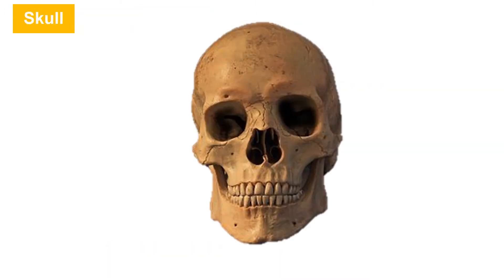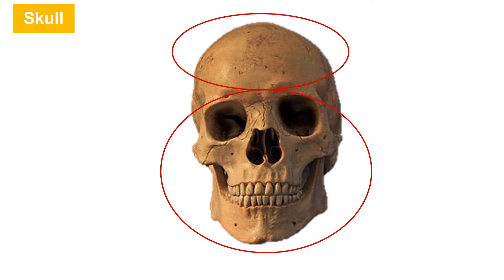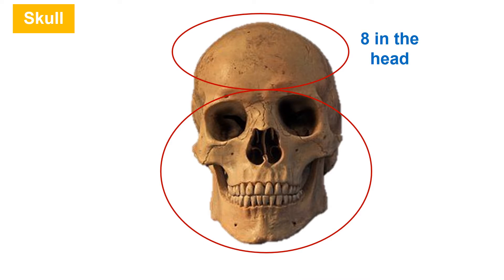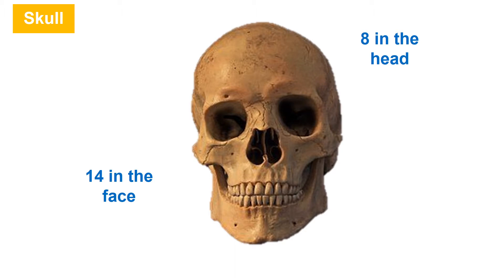The skull is formed by the bones of the head and face. The bones of the skull are flat and strong. There are altogether 22 bones in the skull — 8 in the head and 14 in the face. Note that, except for the lower jaw, none of the bones of the skull can move.